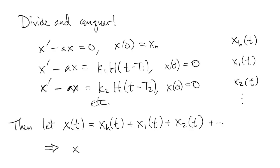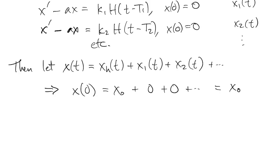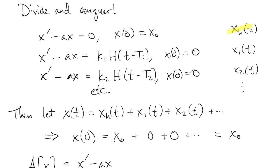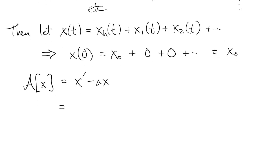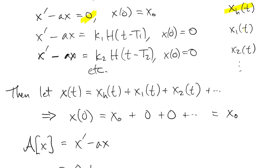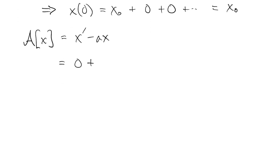Well, it follows because of linearity. First of all, the initial value is correct, because only the first one contributes. And second of all, since the ODE is linear, when we apply the linear operator to X, then that's just the sum of the operator applied to all the individual pieces. So the first one, when we apply the operator, gives 0 because of how we defined it. X1, when we apply the operator, gives the first step function, and so on. So each one brings in one of those individual steps. So this X is the sum of the original problem. This is called the method of superposition.